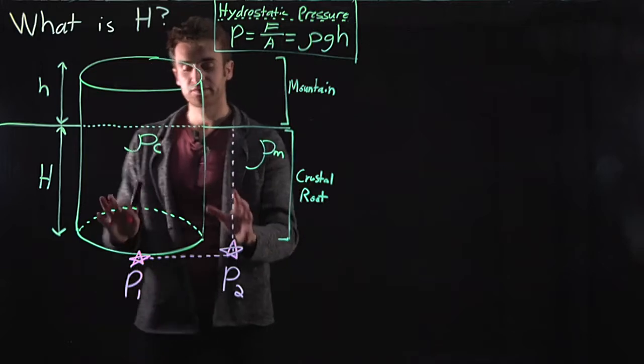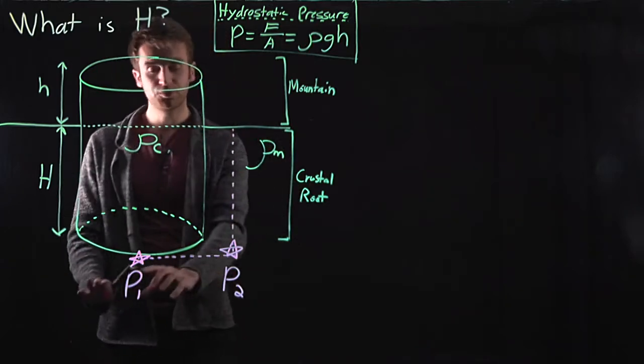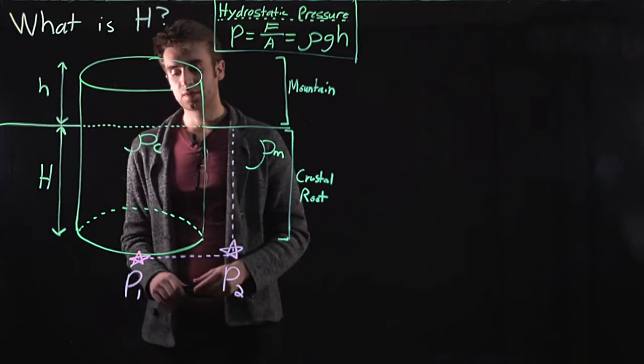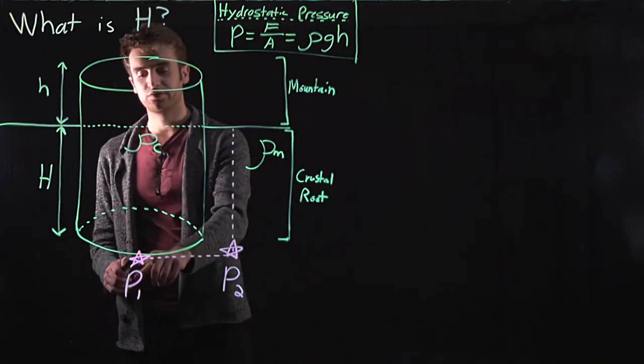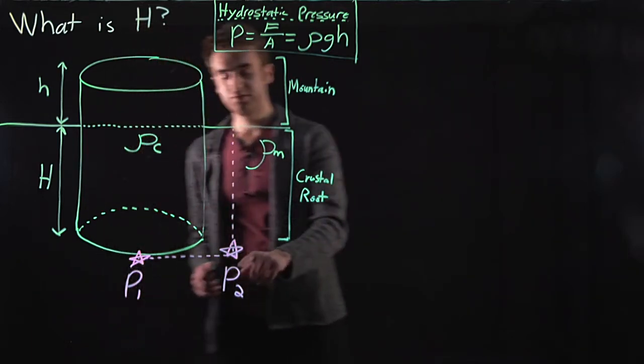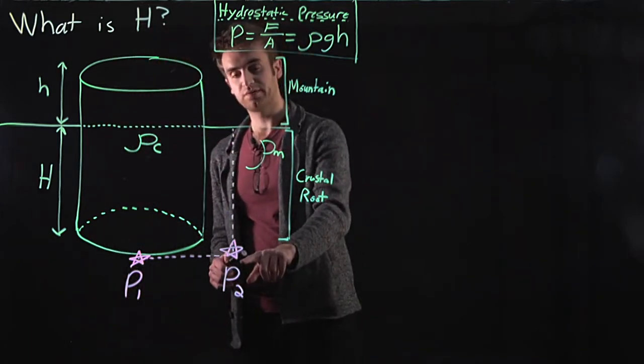Now let's look here at two pressures, p1 and p2. So p1 is just at the base of the crustal root here. And p2 is the adjacent point in the mantle.